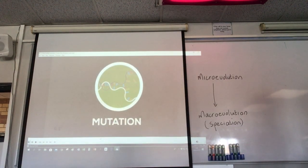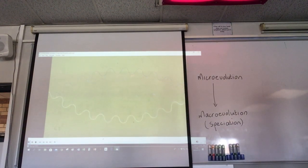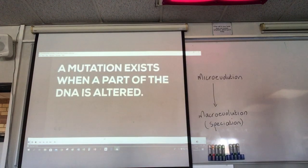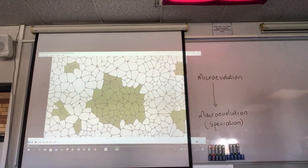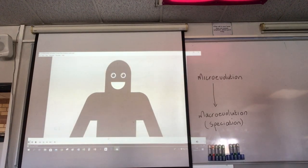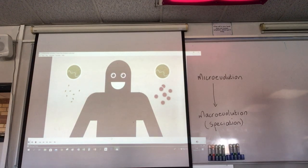Mutations are also important for evolution. Mutations are random changes in DNA - copying errors within the DNA triggered by toxins, chemical substances, or radiation. A mutation exists when a part of the DNA is altered. These changes are often negative and may result in illnesses such as cancer. However, they may also have neutral or positive effects, such as blue eye colour in humans, which is one such random mutation. A mutation has to affect a gamete - a sperm or egg cell - because only the DNA in the gametes is passed on to the offspring.